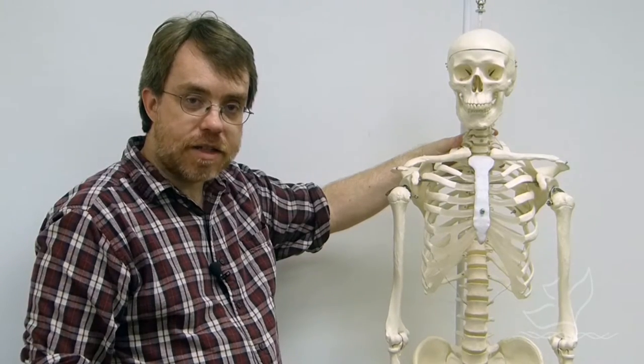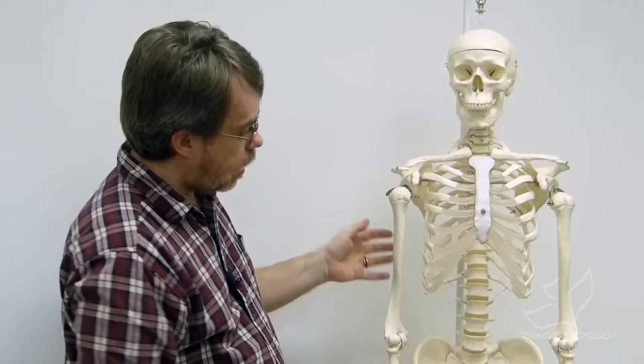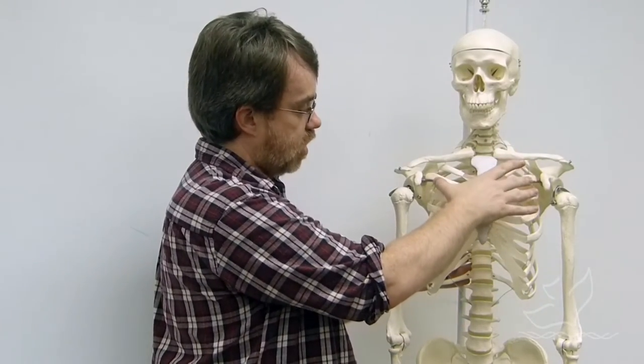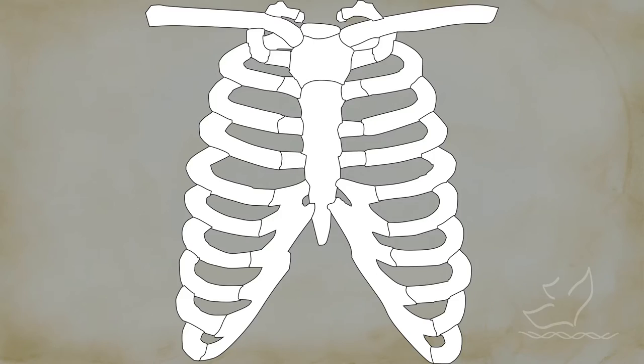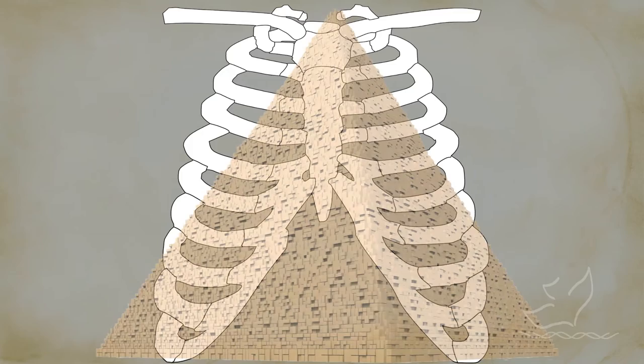Also, what we find in Naledi that's different is the ribs. So the rib cage in the modern human here is essentially shaped like a barrel. It's mostly as broad right up here as it is down here. But the ribs of Naledi seem to show that it sort of comes to a point at the top. It's much more shaped like a pyramid.